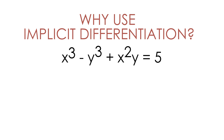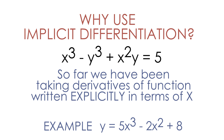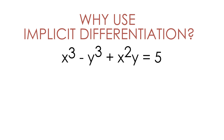The first thing I want to talk about is why we need to use implicit differentiation. Up until this point we have been taking the derivative of functions that are written explicitly in terms of x. For example, if we have y equals 5x cubed minus 2x squared plus 8, all terms on the right are explicitly in terms of x, so we can use standard differentiation. But in this example we have x terms and y terms combined together, so we must use implicit differentiation.